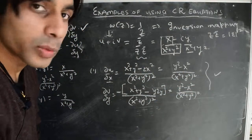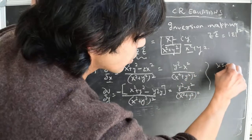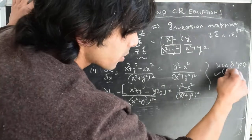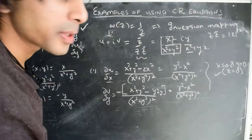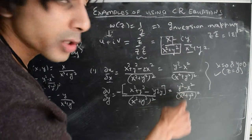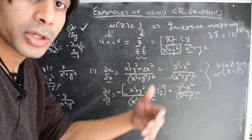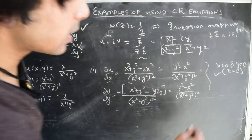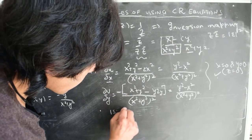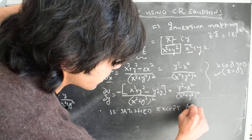One important note: although these expressions are equal, there is a special point where we cannot claim equality — the origin where X = 0 and Y = 0, i.e., Z = 0. At that point, both expressions take the form 0/0, which is not well defined. So the first Cauchy-Riemann condition is satisfied except at Z = 0.